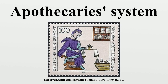Even in Turkey a system of weights similar to the European apothecary's system was used for the same purpose. For medical purposes the okka was divided into 100 drams and the dram into 64 grains. This is close to the classical Greek weight system, where the mina was also divided into 100 drams.